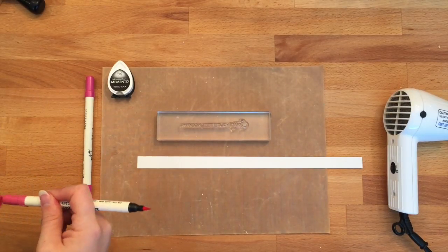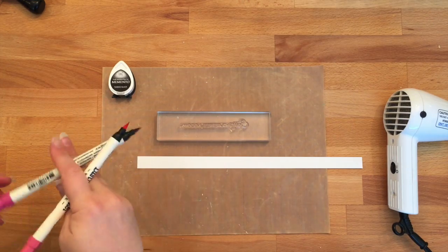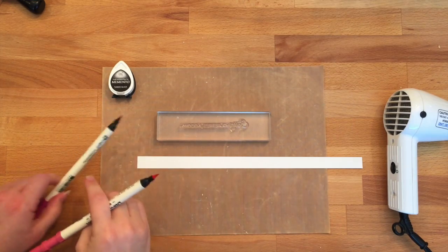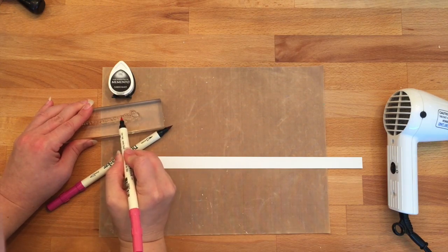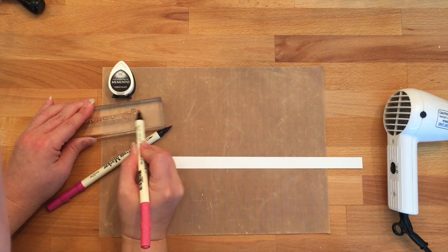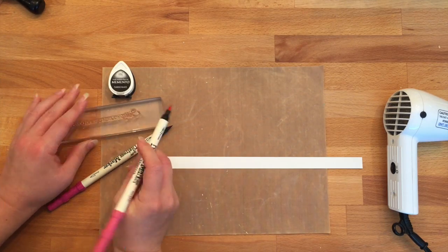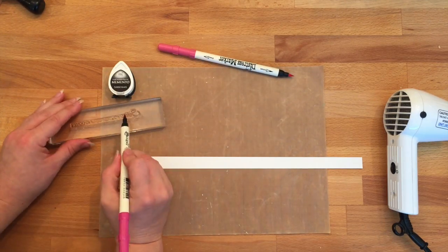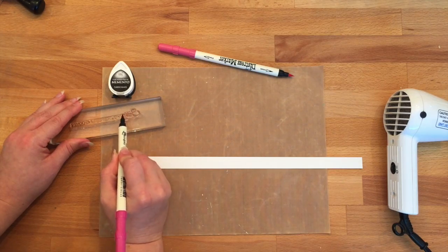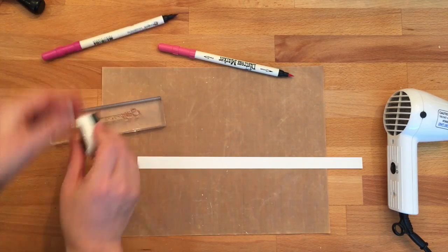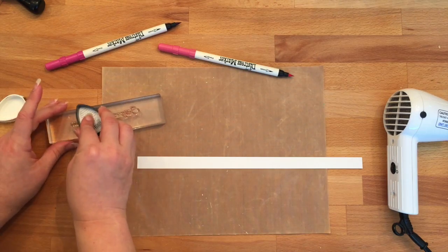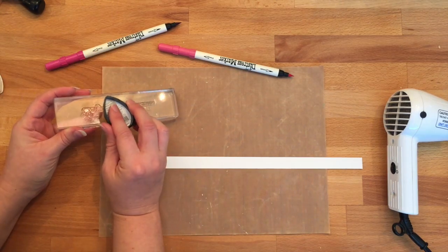Alright, it's greeting time. We're going to use the 'sorry you're feeling down' greeting, which is part of the stamp set. Using the worn lipstick distress marker, we're going to color the entire word 'sorry' so it has a nice coat of the lightest pink. Then using the pickled raspberry distress ink, we're just going to hit a few areas to give it some color depth.